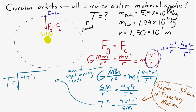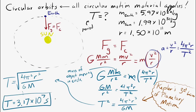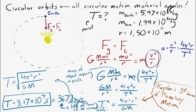Plugging in the known values, the period of the earth around the sun is 3.17 times 10 to the 7 seconds. Converting that to days gives 367 days, which isn't exactly right — a year should be about 365 days. But remember, we assumed the earth's path is a perfect circle, which it isn't, and we only kept three significant digits, so there's some rounding error. Still, not bad.